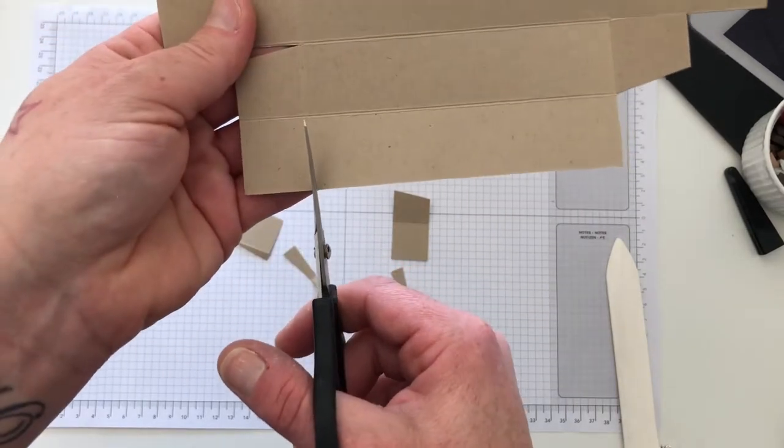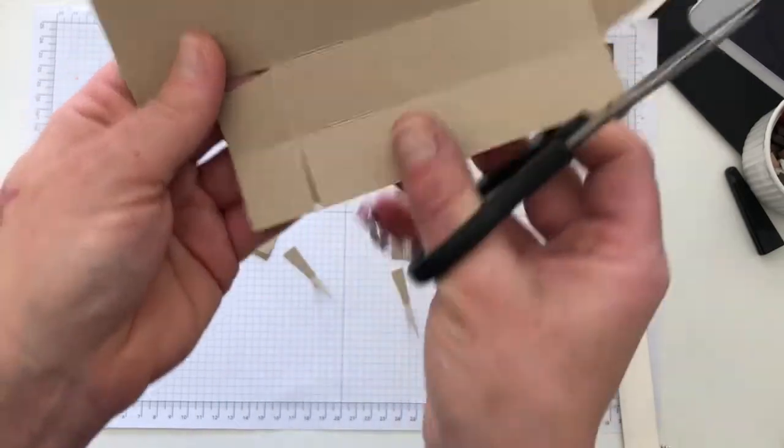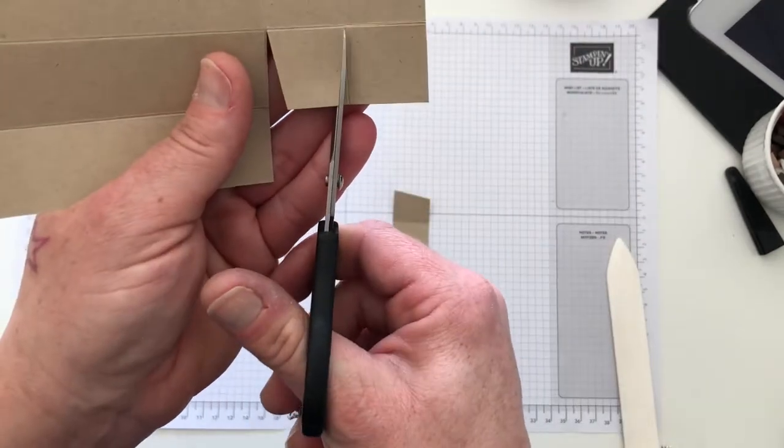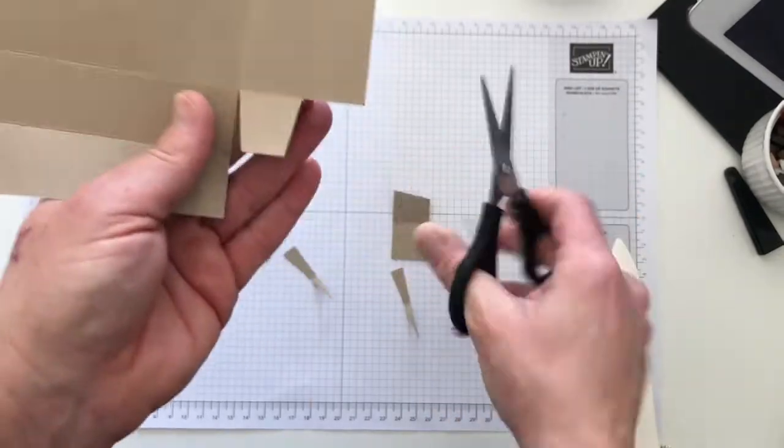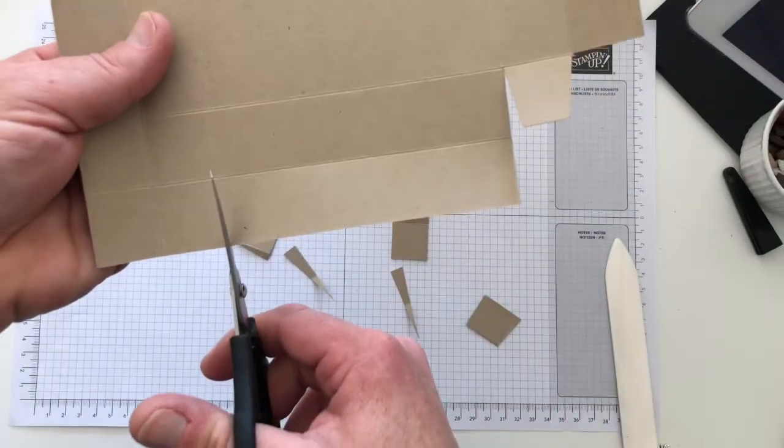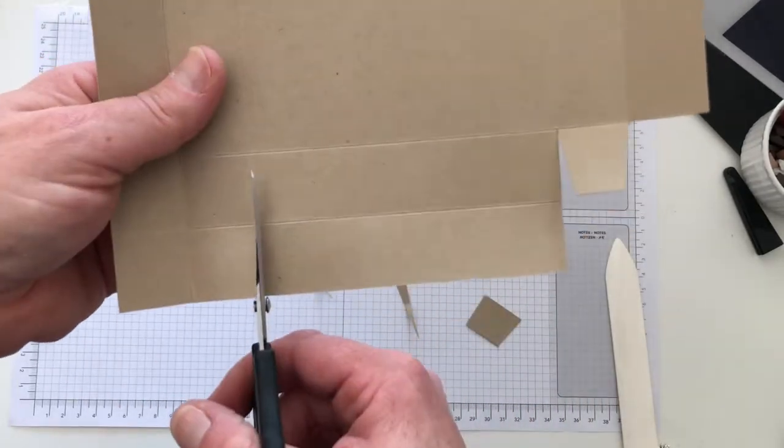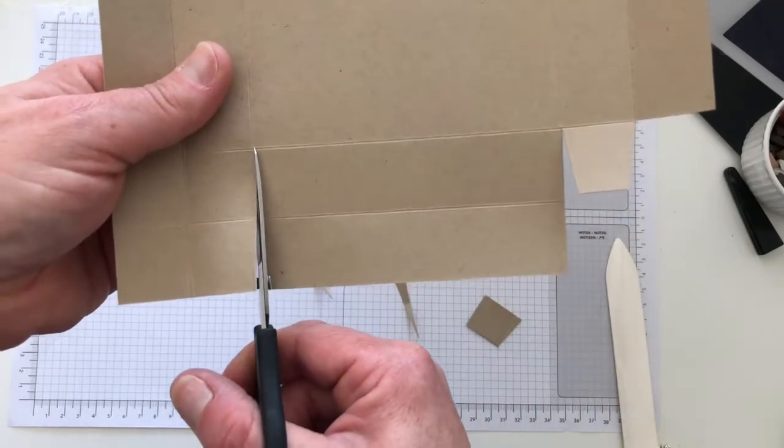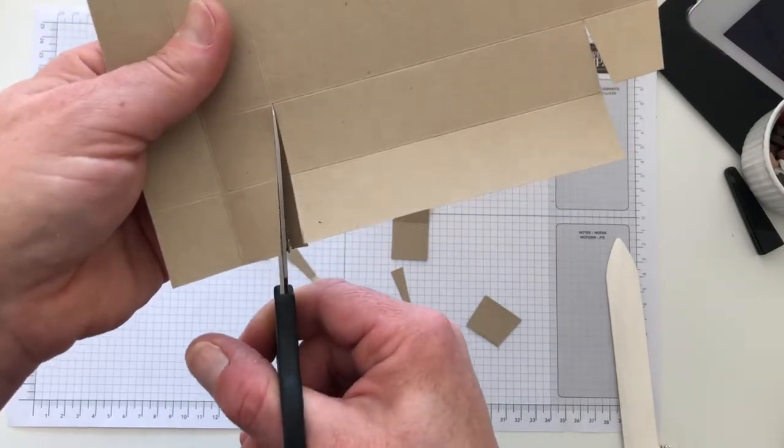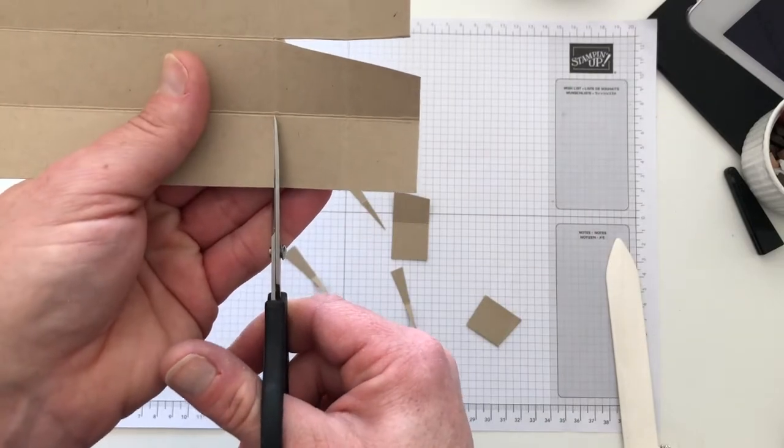Cut down the first score line, cut down the first score line and stop, turn and trim off. So we've got a mirror image, and then I'm going to do the same on this side, but this is going to be a mirror now of that on this side.